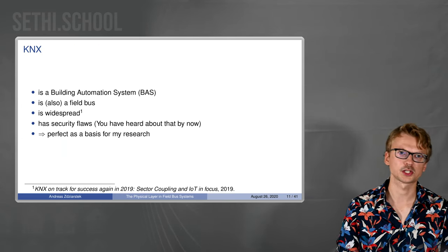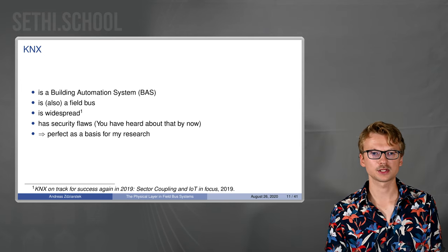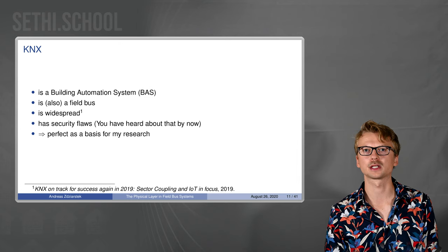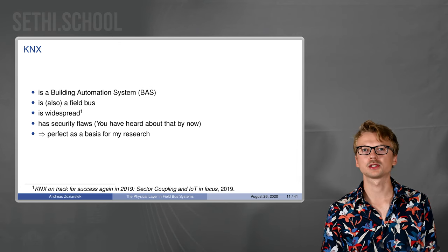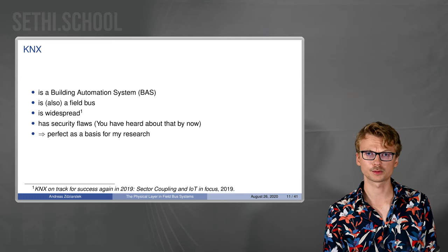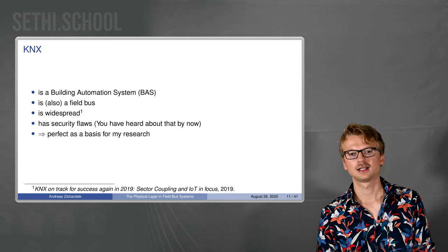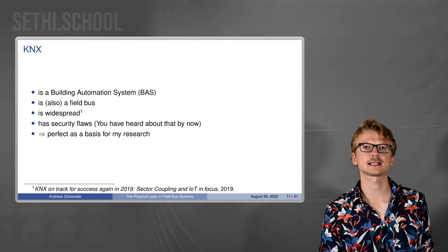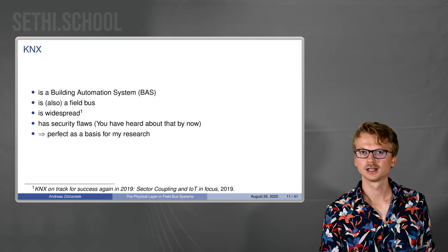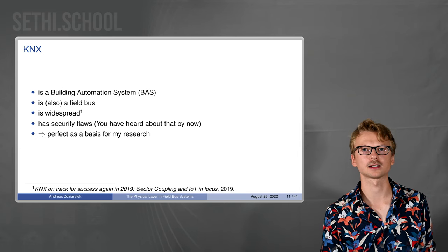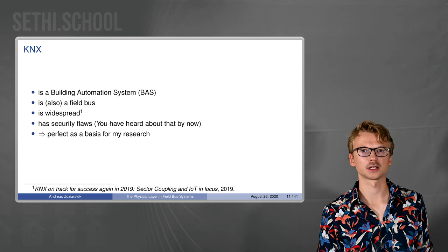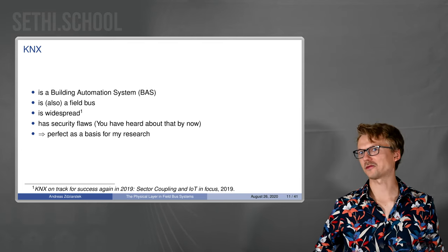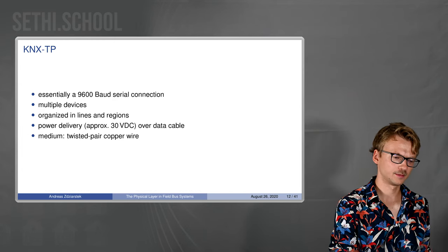Now that we are brushed up on electrical stuff and signal processing, we'll look at KNX very quickly. I believe you've heard of it by now in another talk. It's a building automation system which we like to use for experiments here because it's also a field bus and quite widely used. As you probably have heard in the last talks, it has security flaws basically. You can just hack into it by removing a light switch and connecting to the network and then you can do fun stuff like switch on and off the lights. Anyway, this makes it perfect as a basis for my research.